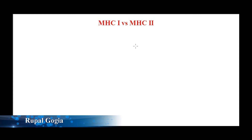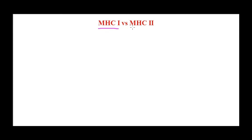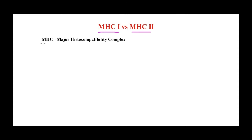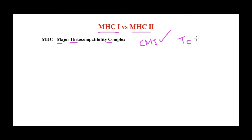Welcome back. Today we are talking about the difference between MHC class 1 and MHC class 2 molecules. MHC — major histocompatibility complex — molecules are very important in our body to provoke cell-mediated immunity. We discussed this in the first video on the immune system; you can see the link on the screen if you want to go back and review.